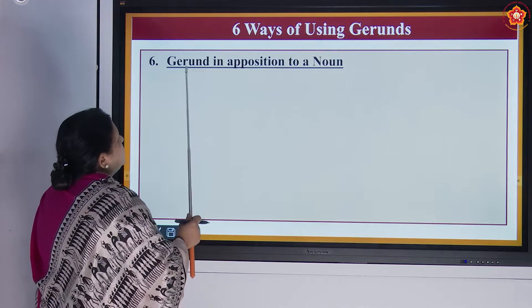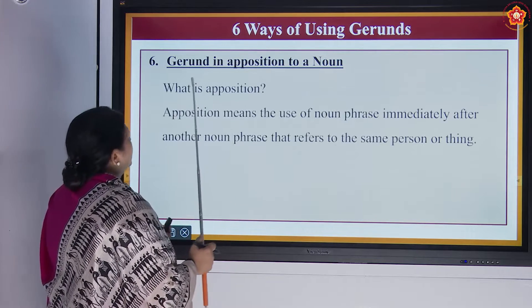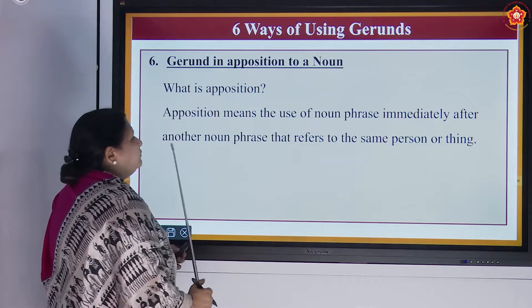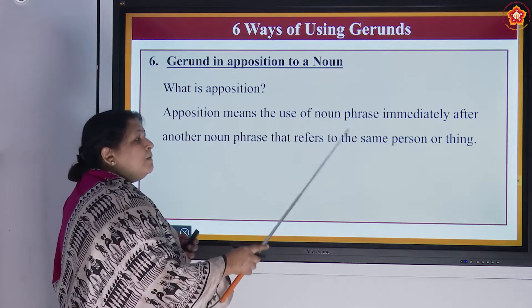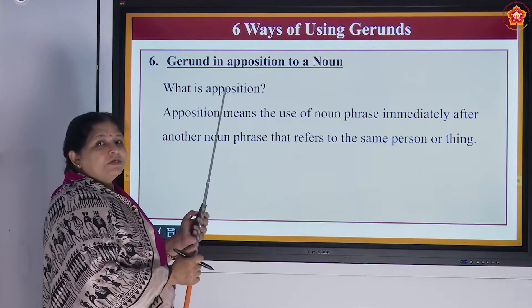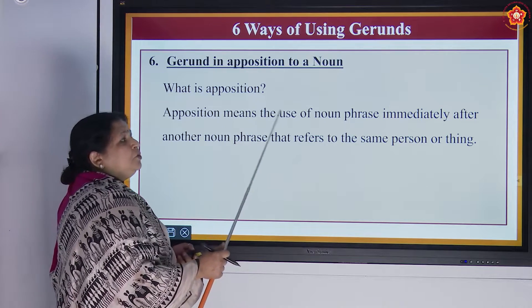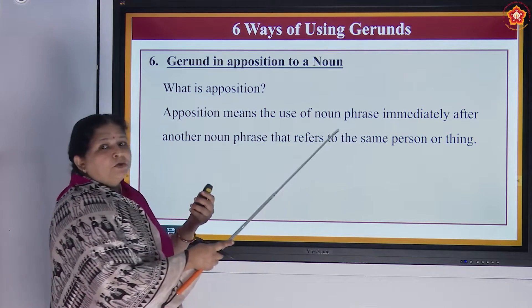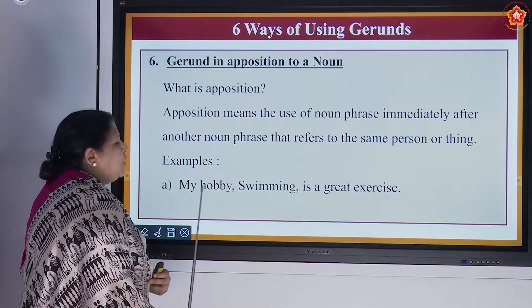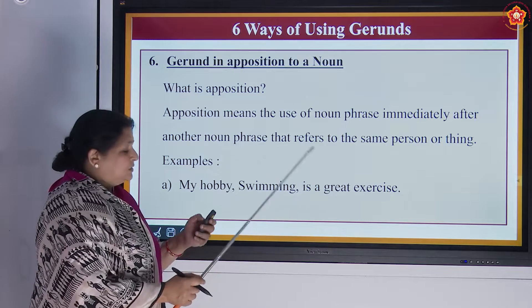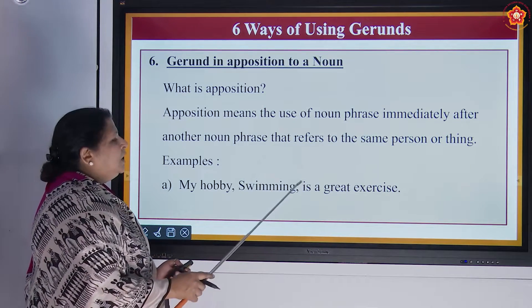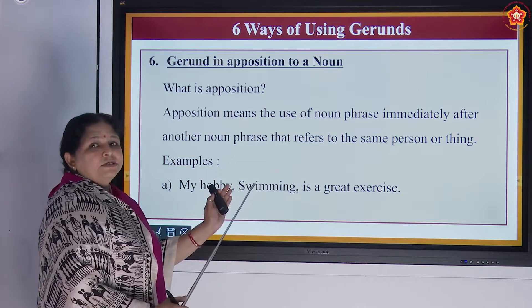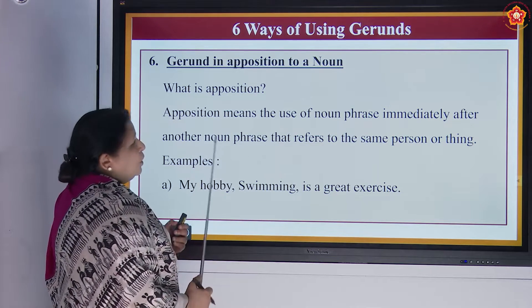The sixth type is gerund as apposition to a noun. Apposition means the use of a noun phrase immediately after another noun phrase that refers to the same person or thing. Example: 'My hobby, swimming, is a great exercise.' Here 'my hobby' is a noun phrase immediately followed by 'swimming,' another noun phrase referring to the same thing. So swimming is a gerund in apposition to a noun.